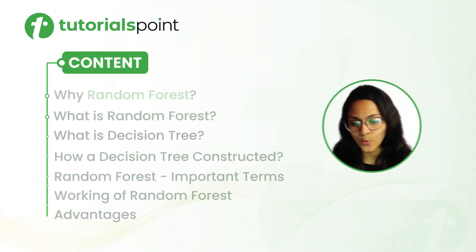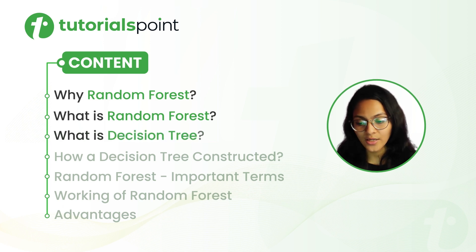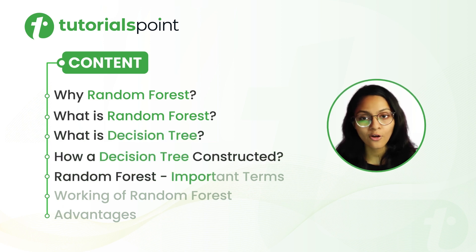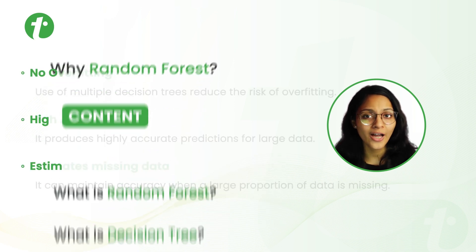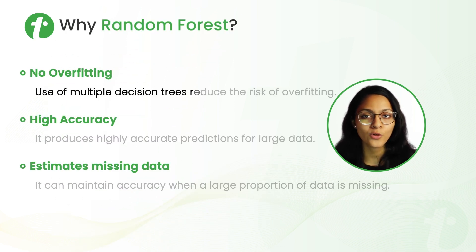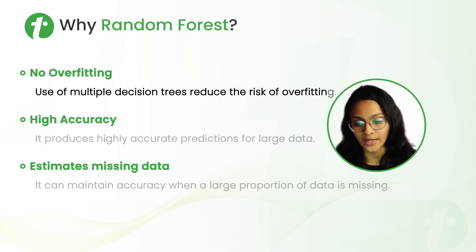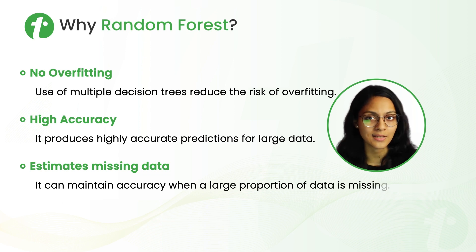We are going to look at why random forest, what is random forest, what is decision tree, how a decision tree is constructed, what are the important terms of random forest, and what is the working of random forest and what are the advantages of random forest. First, why random forest? Random forest uses multiple decision trees, so it will reduce the risk of overfitting. It produces highly accurate predictions for large data, and it can also maintain accuracy when a big portion of the data is missing.